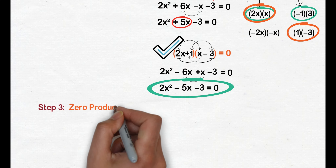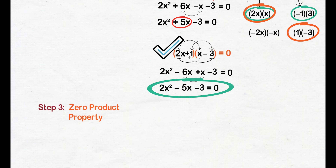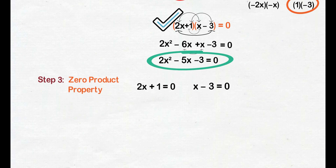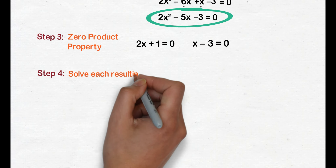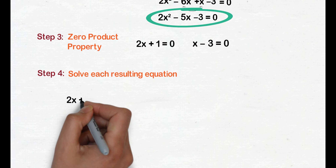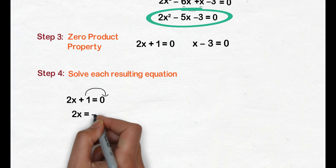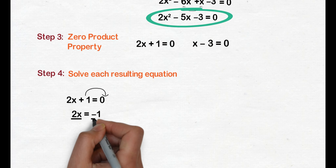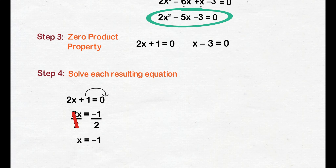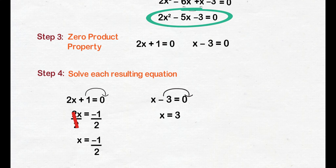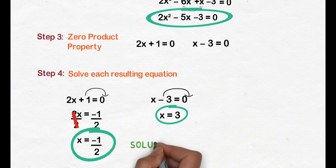Step 3, apply the zero product property by setting each factor equal to 0. We get 2x plus 1 equals 0 and x minus 3 equals 0. Step 4, solve each resulting equation. Unahin natin ang 2x plus 1 equals 0 — transpose 1 to the right side, we get 2x equals negative 1. To isolate x, divide both sides by 2, we get x equals negative 1 over 2. Next, x minus 3 equals 0 — transpose negative 3 to the right side, we get x equals 3. So, negative 1 half and 3 will be our solutions or roots.